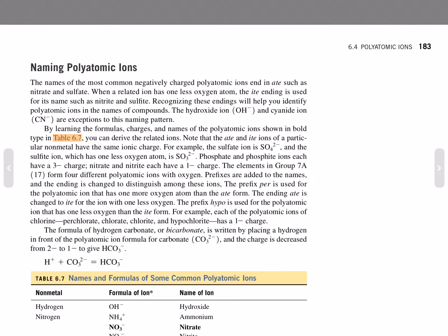The prefix per- is used for the polyatomic ion that has more oxygen than the -ate form, and the ending -ate is changed to -ite for an ion with one less oxygen. The prefix hypo- is used for the polyatomic ion that has one less oxygen than the -ite form. For example, each of the polyatomic ions of chlorine - perchlorate, chlorate, chlorite, and hypochlorite - has a negative 1 charge.